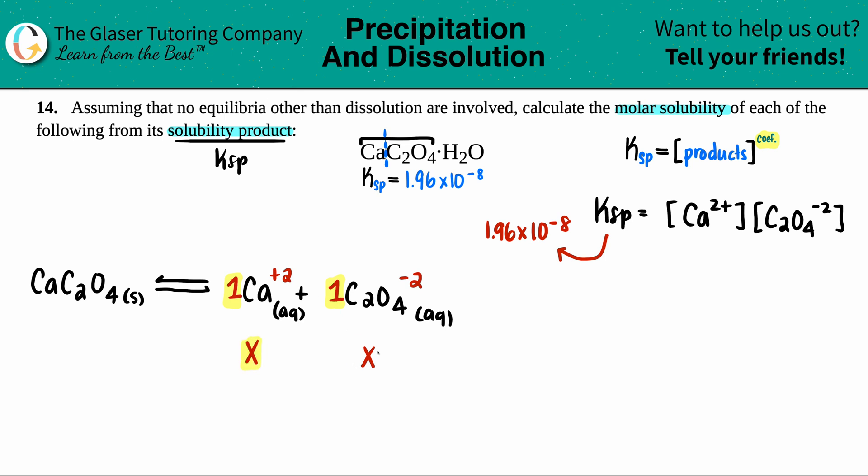So I'm going to use these two values for my concentrations. So that means that this is going to be plugged in as X. This is going to be plugged in as X.